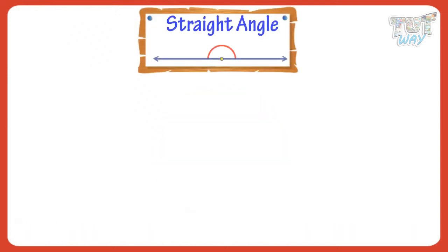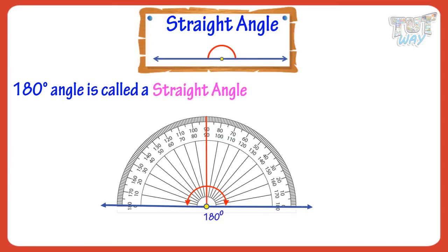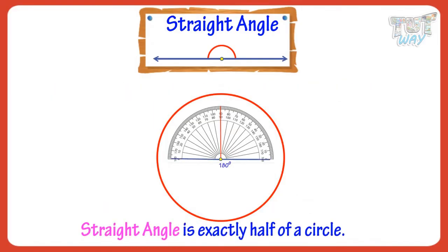Now, let's see what is a straight angle. A 180 degree angle is called a straight angle, as it's a straight line. So, straight angle is exactly half of a circle.